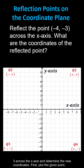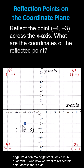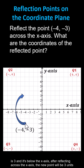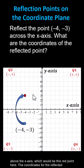First, plot the given point negative 4 comma negative 3, which is in quadrant 3. And now we want to reflect this point across the x-axis, which is the horizontal axis. Notice the given point is three units below the x-axis. After reflecting across the x-axis, the new point will be three units above the x-axis, which would be this red point here.